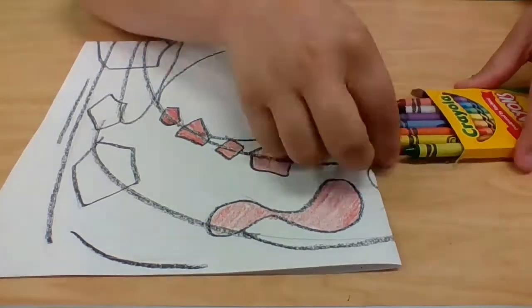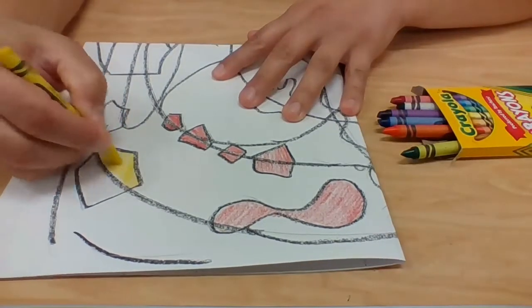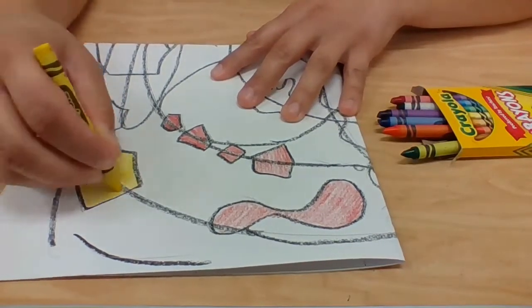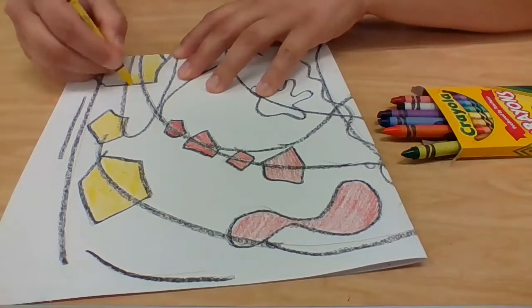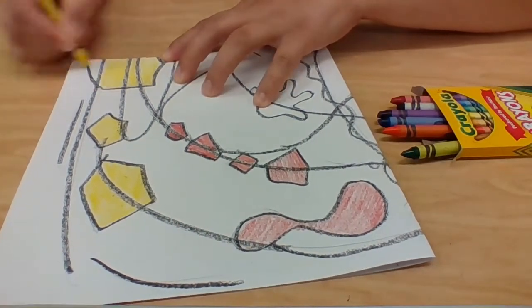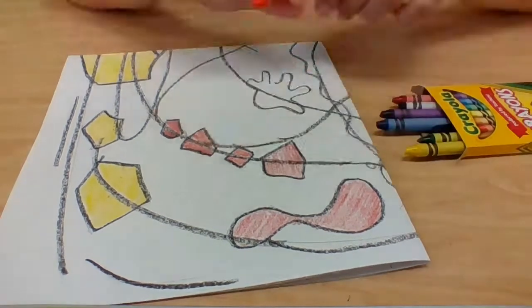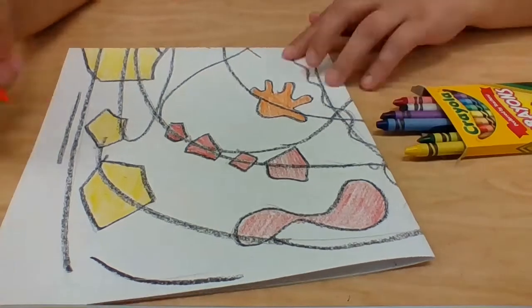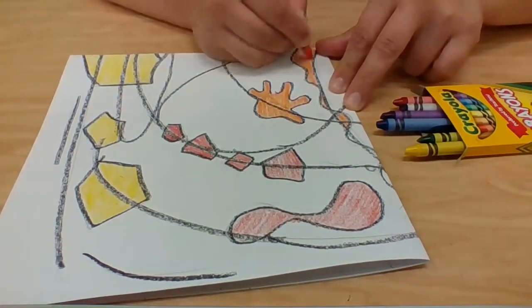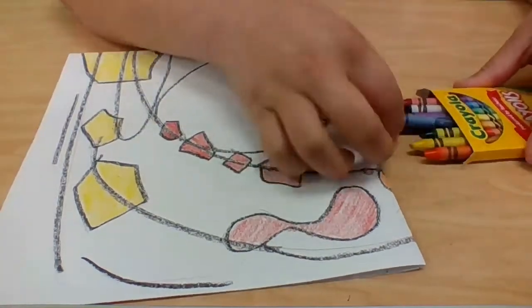As you start coloring, it's okay if you don't color inside the lines. You can color outside of the lines if you want to. What I'm doing is I'm finding some of the shapes that I created from my sound drawing and I'm filling them in using different colors, making sure that I put the color that I'm finished with back in the box as soon as I am completed with that area.